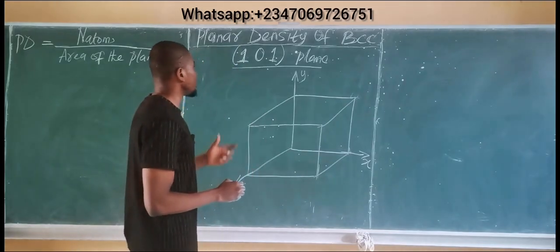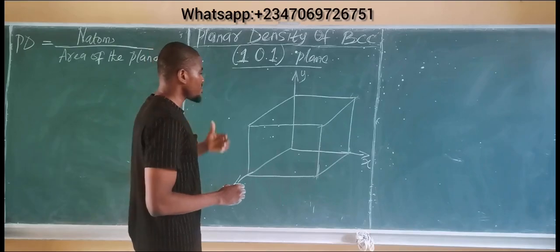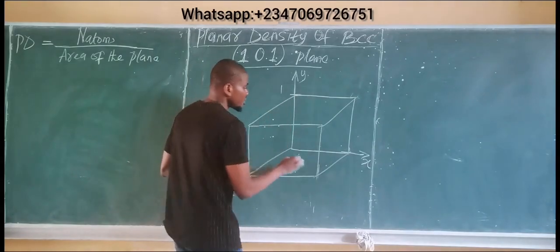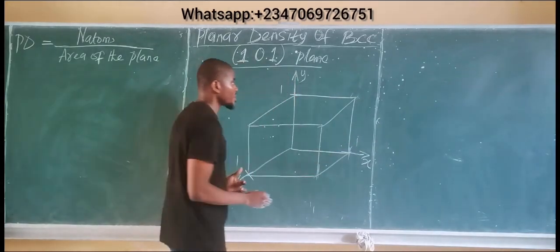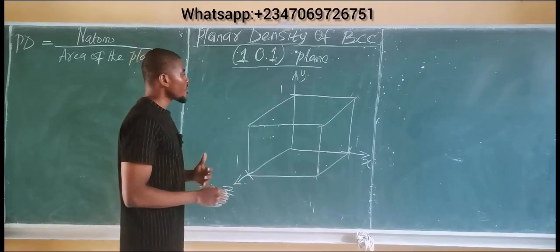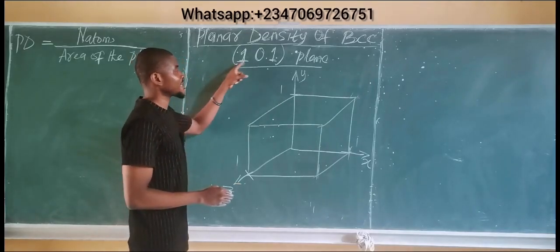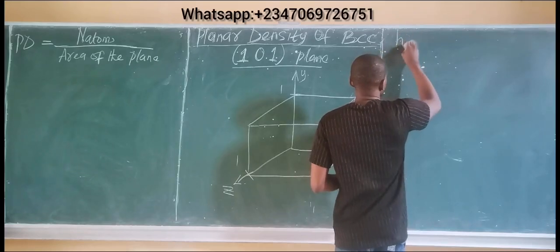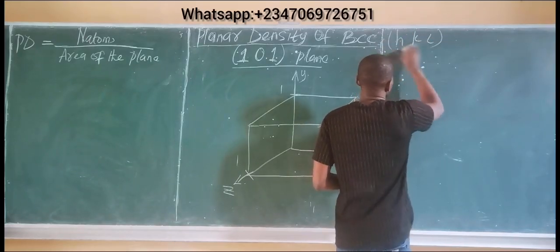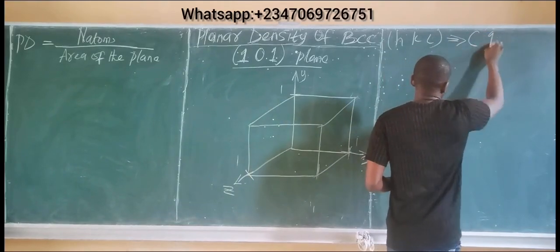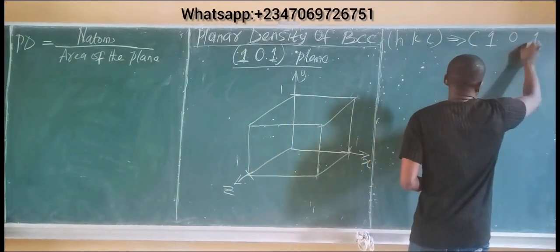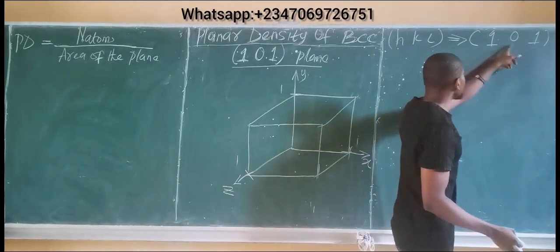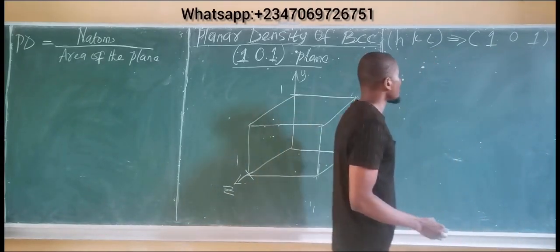Now we want to plot the plane 101, keeping in mind that each of these distances apart are 1 unit. The plane 101 — let's find the intercept of this given Miller indices. The Miller indices are h, k, l, given in the question as plane 101, so h = 1, k = 0, and l = 1.